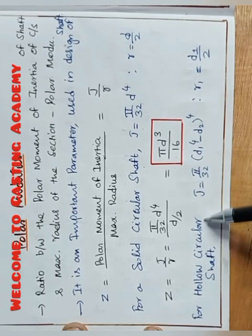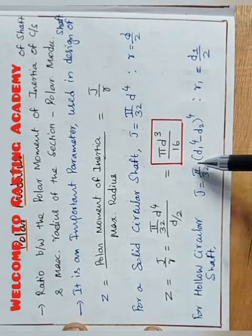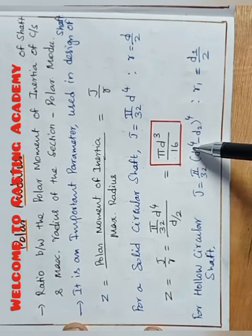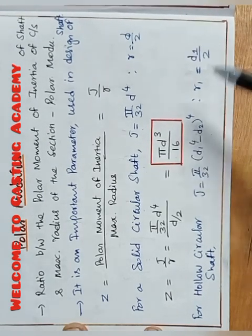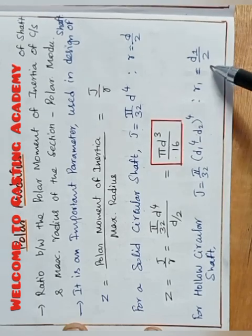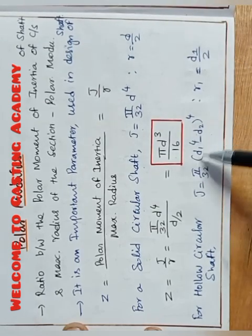In case of hollow circular shafts, J equals pi by 32, D1 power 4 minus d2 power 4. Here R1 equals d1 by 2. So cases differ.